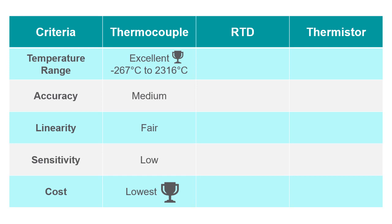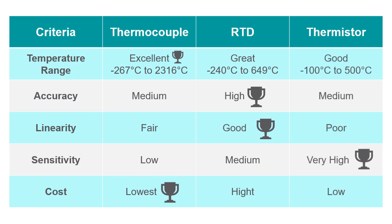Thermocouples are inexpensive, rugged, and have a fast response time, but are less accurate and the least stable and sensitive. Thermocouples also read only relative temperature distance between the tip and the leads, while RTDs and thermistors read absolute temperature.